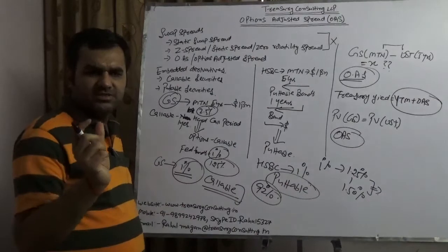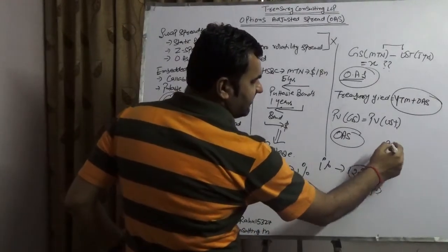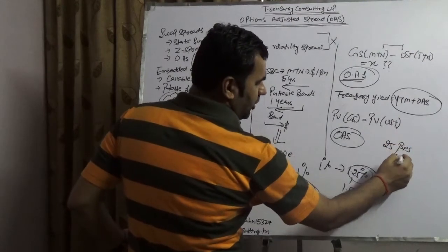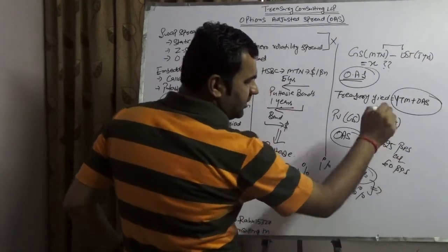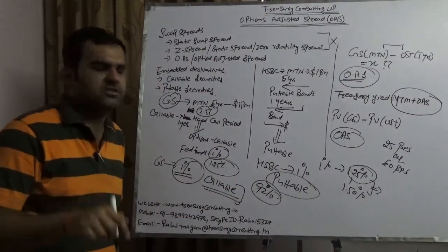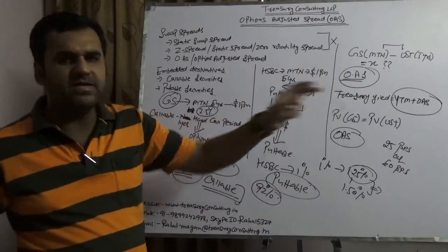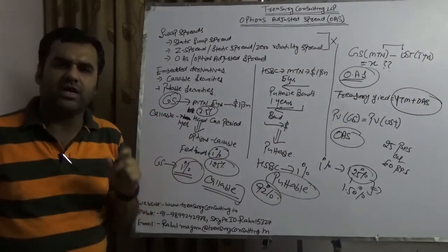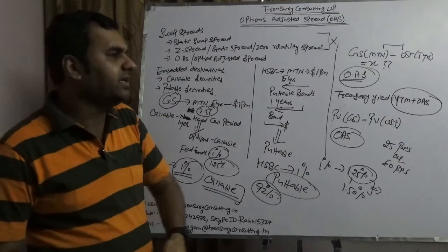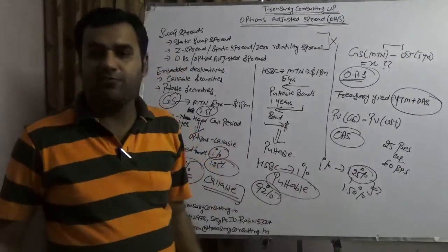Now what is options adjusted spread? Which is this: 25 basis points or 50 basis points precisely. Now we need to check out of this 25 basis points or 50 basis points what should be the option adjusted spread. And this is the game plan, and this is how we need to calculate OAS. So once a trader would be calculating this spread position, he would be calculating using this.